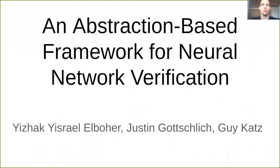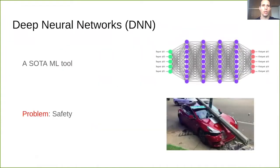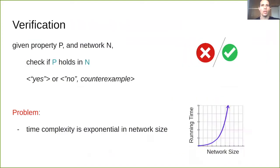An abstraction-based framework for neural network verification by Yitzhak El-Bucher, Justin Gottlich, and Guy Katz. Deep neural networks overtake state-of-the-art benchmarks in many tasks, but are vulnerable to input perturbations, and hence are dangerous to be used in critical systems like self-driving cars. In order to guarantee safety, verification tools are applied to prove or disprove if a given property holds in a given network.